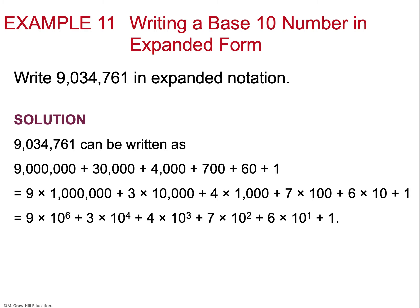The base 10 system is the Hindu-Arabic system. For example, 9,034,761 written in expanded form shows 9 × 1,000,000 plus 3 × 10,000, and so on — all powers of 10. I can then replace those powers of 10 with exponential notation: 1,000,000 becomes 10⁶, 10,000 becomes 10⁴, and so on. That's why we call this system base 10 — any number can be rewritten using powers of 10 in a multiplicative grouping.